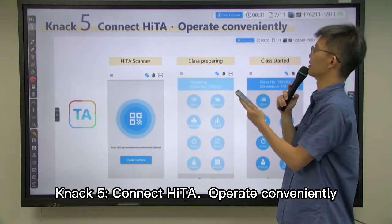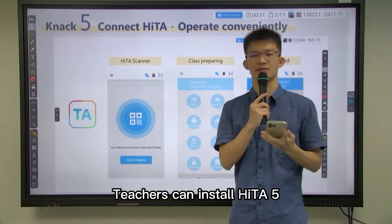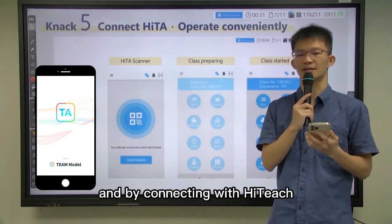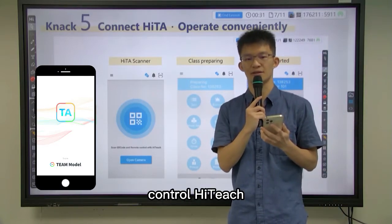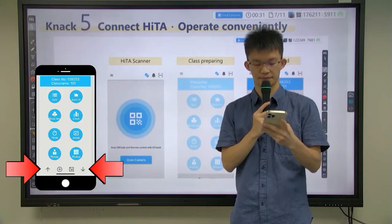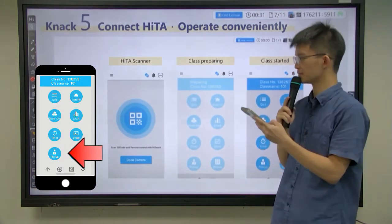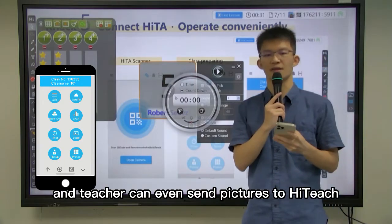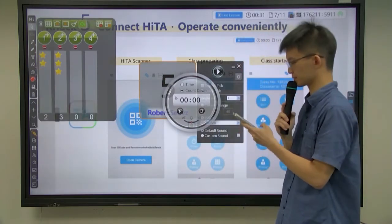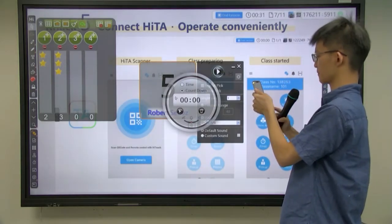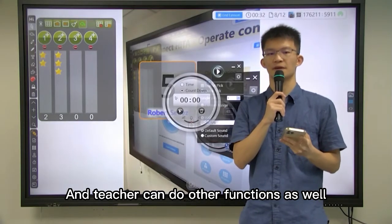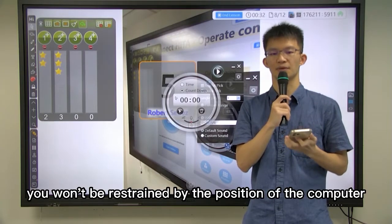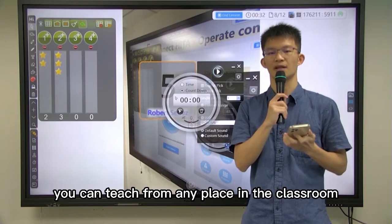Knack 5: Connect HiTA, operate conveniently. Teachers can install HiTA 5 Team Model Teacher app on their smartphone. By connecting with HiTeach, HiTA can become a remote control. Teachers can switch pages, use pick-out, use timer, use scoreboard, and even send pictures to HiTeach. Teachers can do other functions as well. This means that with HiTA in hand, you won't be restrained by the position of the computer or whiteboard. You can teach from any place in the classroom.